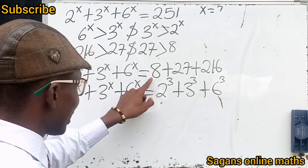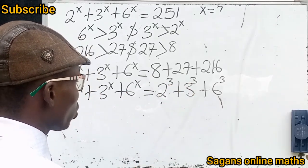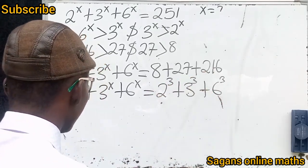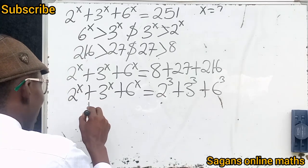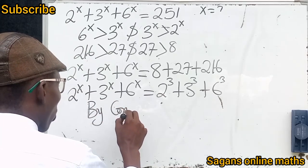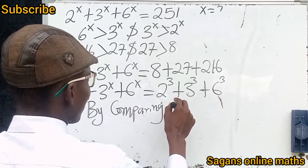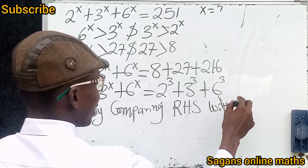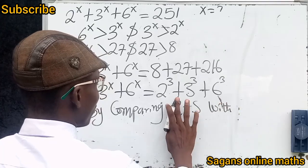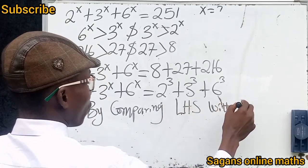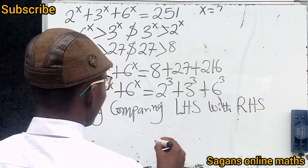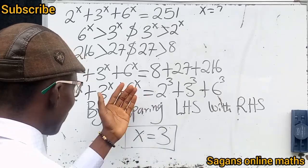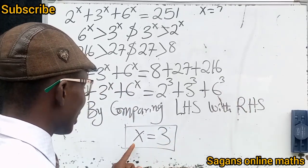Because 2 raised to the power of 3 simply means 2 times 2 three times, which is 8. And 3 raised to the power of 3 simply means 3 times 3 three times, which is 27. And 6 raised to the power of 3 simply means 6 times 6 three times, which is 216. Now, by comparing the left hand side with the right hand side...